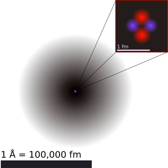The following table shows atomic radii computed from theoretical models, as published by Enrico Clementi and others in 1967. The values are in picometers.